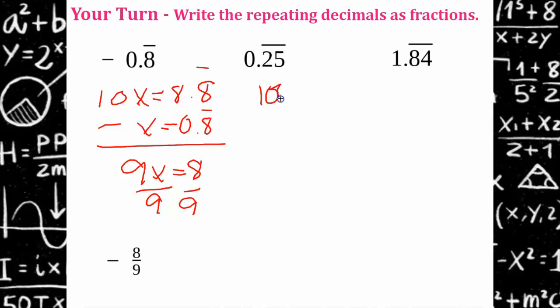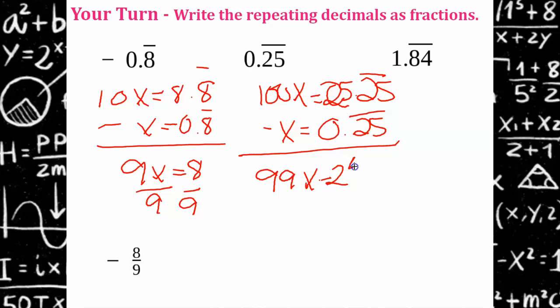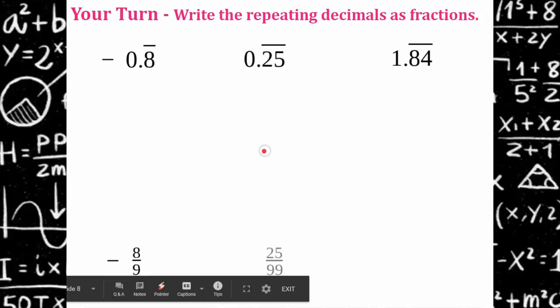So negative 8 ninths. Up here you're going to have 100x equals 25.25 repeating. Subtract x equals 0.25 repeating, which will give you 99x equals 25. Dividing both sides by 99, and you get 25 over 99.